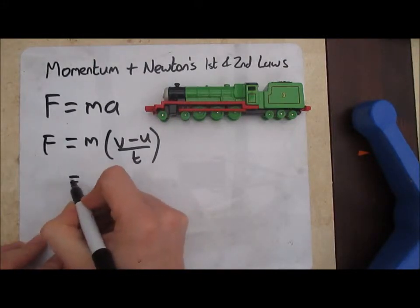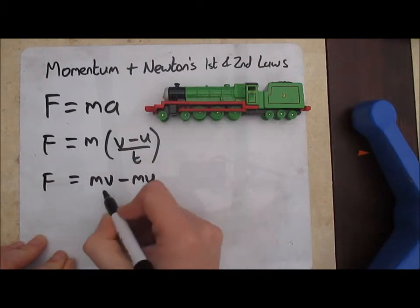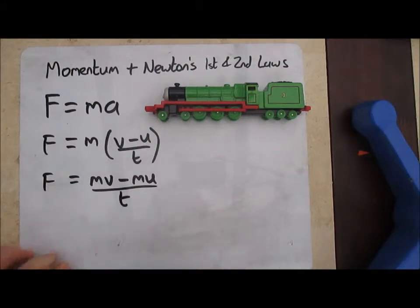So force is now equal to that. If we multiply that equation through by the m we're given force is mv minus mu all divided by t.